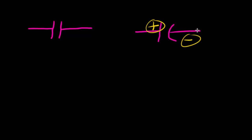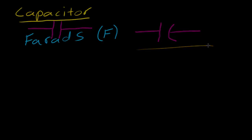The curved side represents the cathode or the more negative side of the component. That's the important difference between the two schematic symbols. Generally when you see the curved-line symbol, it's probably an electrolytic capacitor because it is polarized.